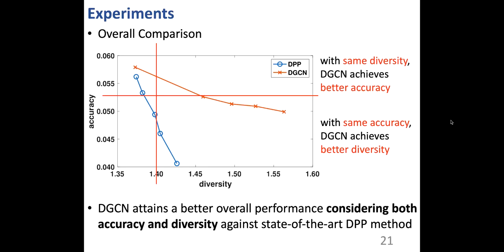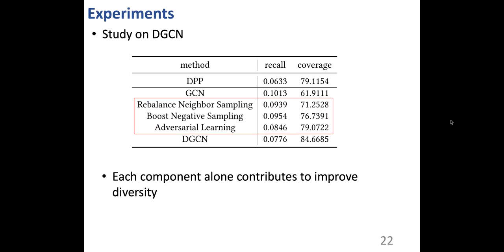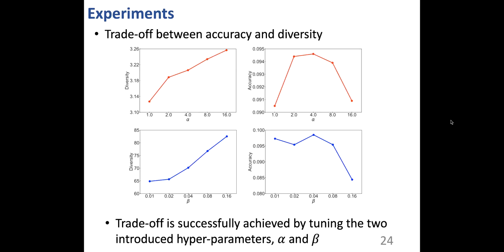Here we provide the ablation study of DGCN. We evaluate the performance of adding only one special design of diversification to GCN. We can observe that each component alone contributes to improved diversity, and combining the three special designs achieves the most diverse recommendation. Finally, we show the performance under different values of alpha and beta. By increasing alpha or beta, diversity could be effectively improved with acceptable loss on accuracy. In other words, trade-off between accuracy and diversity is successfully achieved by tuning the two introduced hyperparameters.